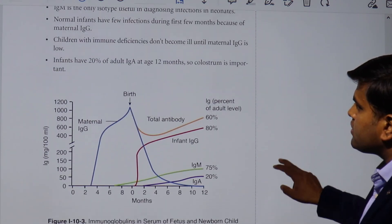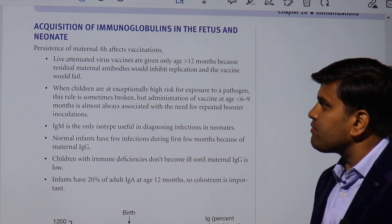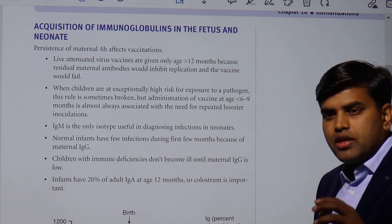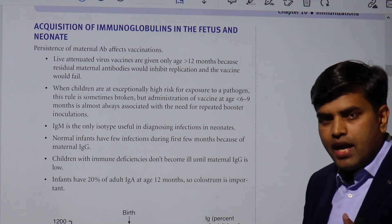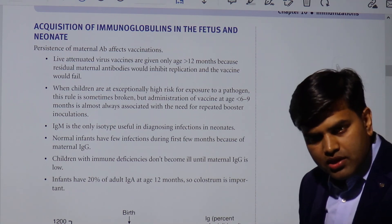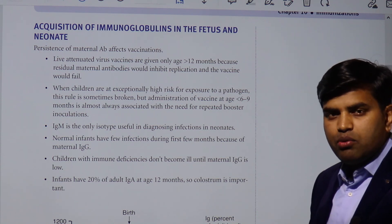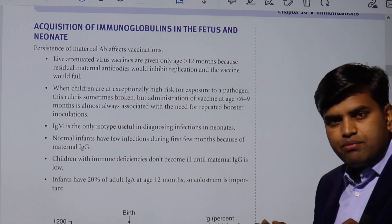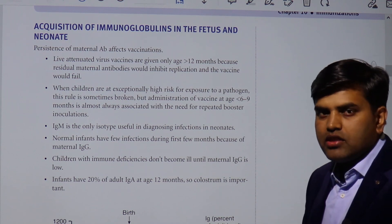The last point concerns acquisition of immunoglobulins in the fetus and neonate, and how persistence of maternal antibodies affects vaccination. The baby born is protected by antibodies transferred from the mother through the placenta and breast milk. The more diseases the mother has overcome and the more vaccinations she has received, the more antibodies are present in her body, and the more are transferred to the baby. Because of this, newborns have preformed natural passive immunity and are protected from many diseases for quite some time.